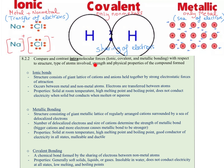To start with intramolecular forces, we already know the three types. We have ionic bonds, which occur between a metal and a non-metal, and they involve transfer of electrons. The metal loses its valence electron or electrons, and the non-metal gains them to form ions — a positive ion called the cation, and a negative ion called the anion.